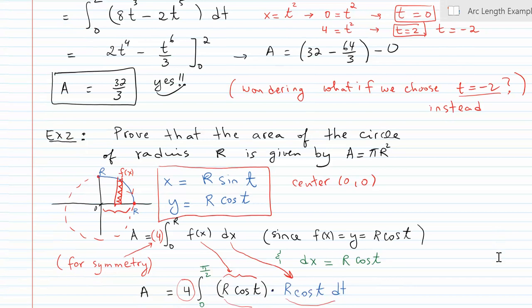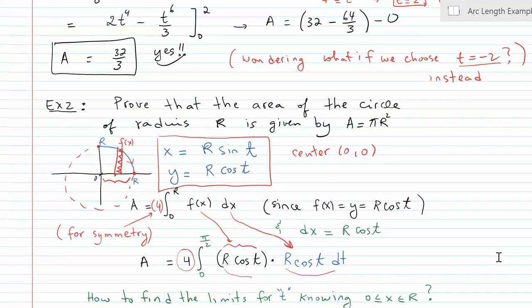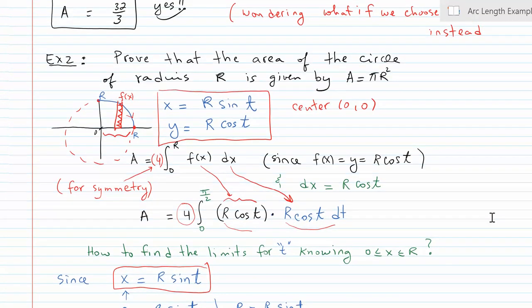For example two, we're going to be proving that the area of a circle is πr². I gave you the parametric form of a circle centered at (0, 0) — this is one of many forms we could use. What I'm trying to do here is set it up in rectangular form and integrate it with respect to dx again.